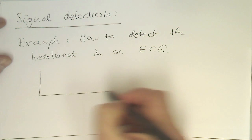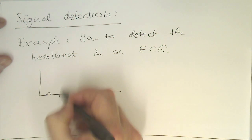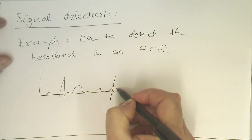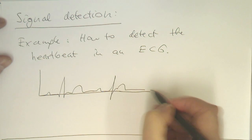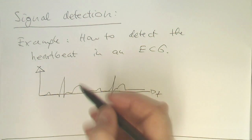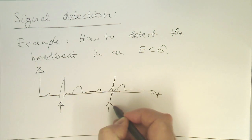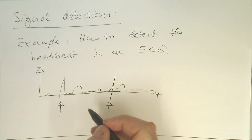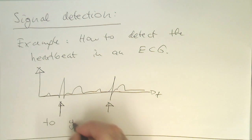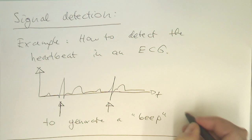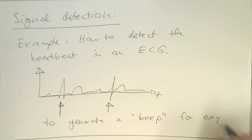Imagine we've got here our classical ECG, which looks like that. And there's another one here. So, that's our ECG here. And the question is, how can we generate a detector which is detecting these moments here in time? To generate a beep for every heartbeat.